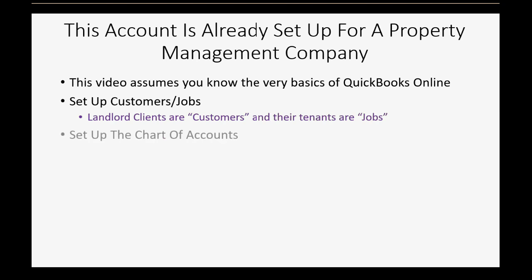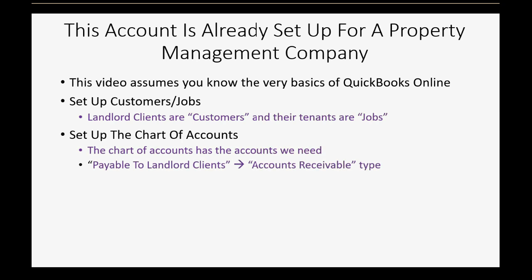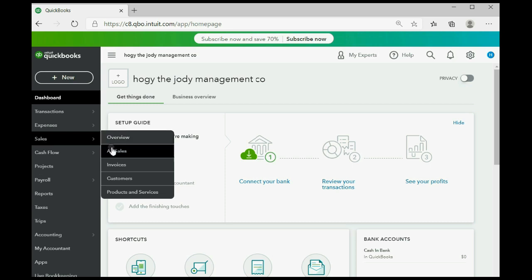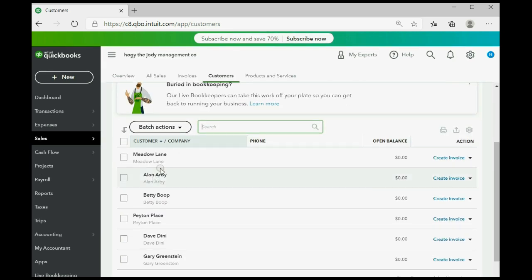When you set up your chart of accounts, most accounts are normal typical accounts, but one special account to give attention to is the account called 'Payable to Landlord Clients,' and that needs to be an accounts receivable type of account. When we click Sales > Customers, you can see Meadow Lane would be the name of the landlord, and Alan Arby and Betty Boop would be tenants who live in that landlord's property.